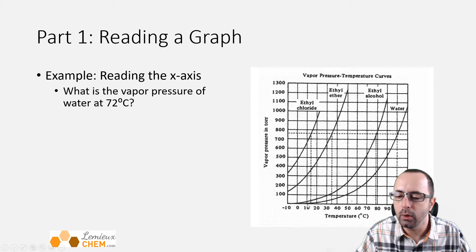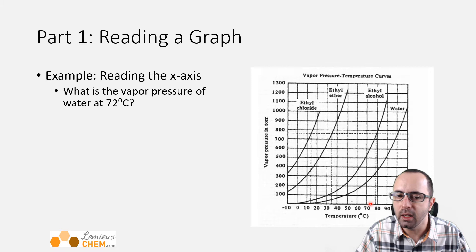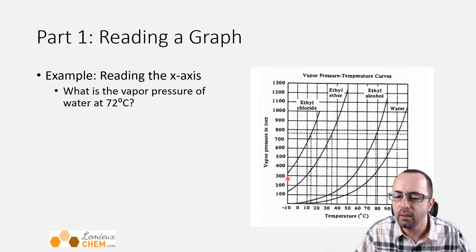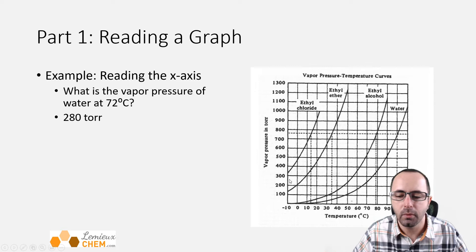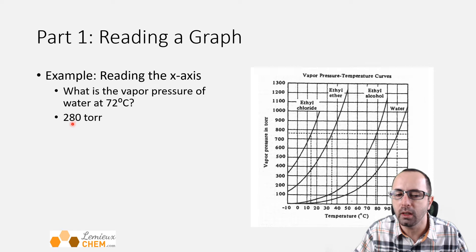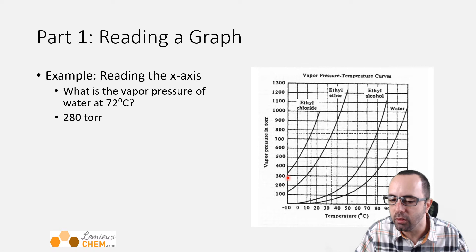Let's go ahead and read this graph. What is the vapor pressure of water at 72 degrees Celsius? If we read on the horizontal axis, 72 is between 70 and 80, closer to 70, so right around here. We read up to the curve that represents water, then read all the way across. This is between 200 and 300, closer to 300, so we might read this as about 280 Torr. If you said 270 or 290, that's okay too — we're reading this visually, so we have some uncertainty. We don't really know anything beyond that because it's too hard to divide this space into a hundred little pieces.